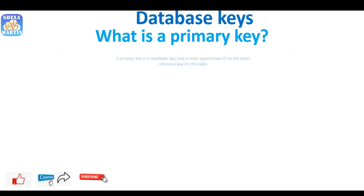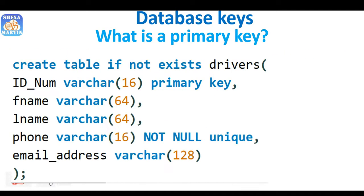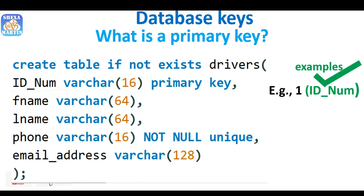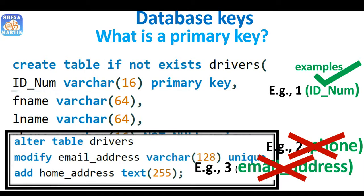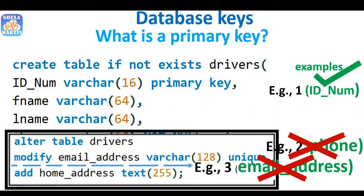Like any candidate key, the primary key must contain unique values, must never be null, and must uniquely identify each record. There can be more than one candidate key in a relation, but only one is chosen as the primary key. In our drivers table example, id_num is selected as the primary key from the list of candidate keys — others are not selected.